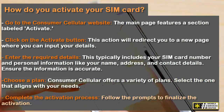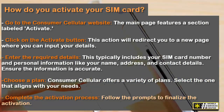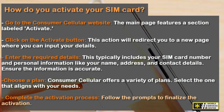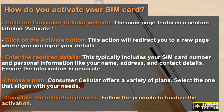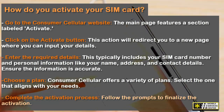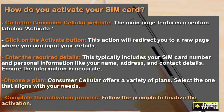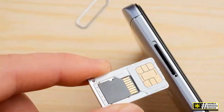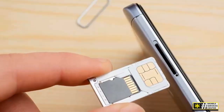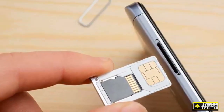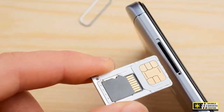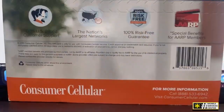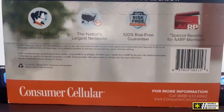Complete the activation process by following the prompts to finalize the activation. This may involve setting up your voicemail and configuring other phone settings. Keep your phone turned on and within a service area during activation, allowing it to receive a network signal — a crucial part of the activation process.